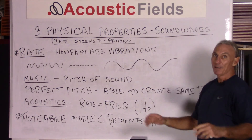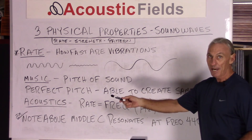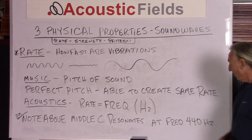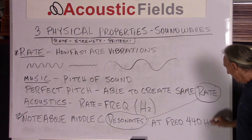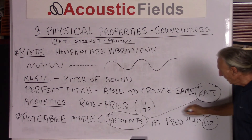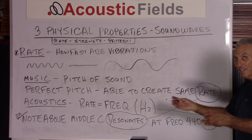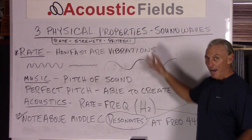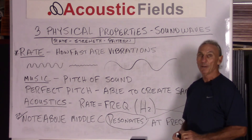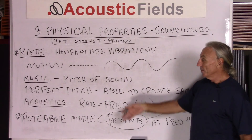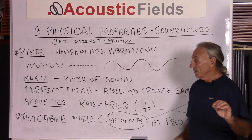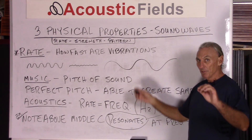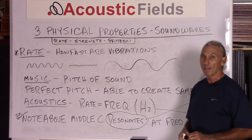If we add this all into a sentence and try to tie everything together, here's an example: any note above middle C resonates at a frequency of 440 cycles. That tells us rate resonates at a particular frequency, which is expressed in hertz. That example illustrates rate and how it moves between music and acoustics — just two paradigms being considered. If you understand it in one dimension like music but not in acoustics, just make a simple mental shift in how the two are correlated and you'll be fine.